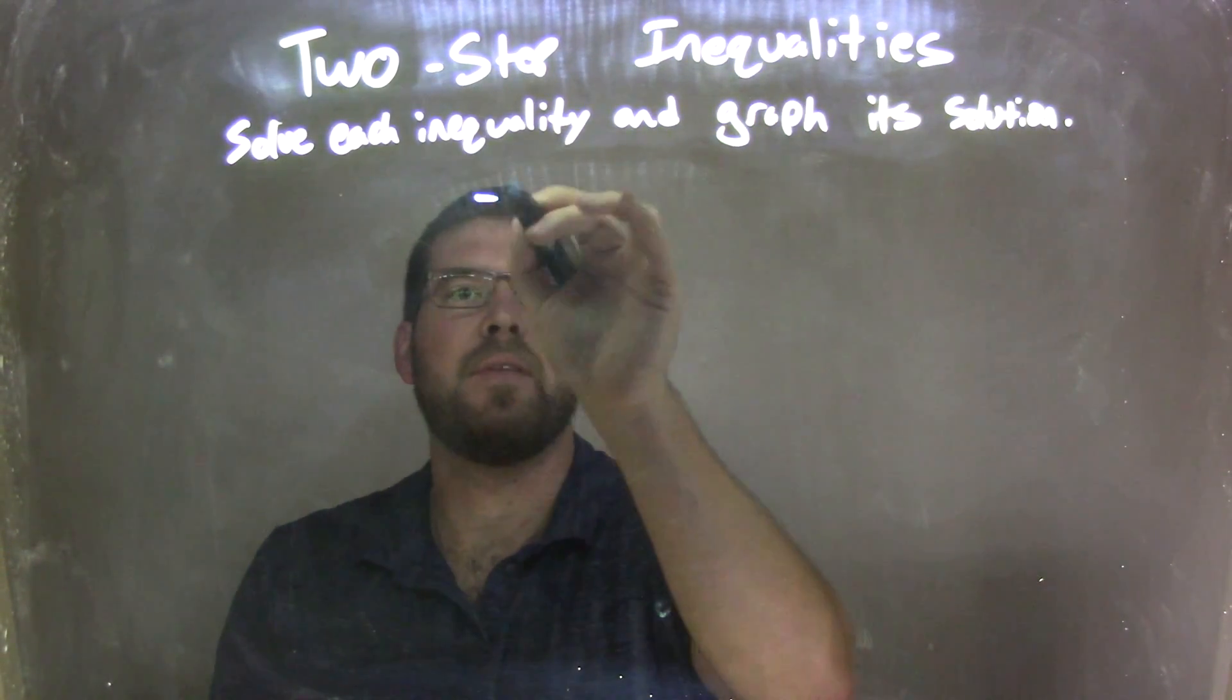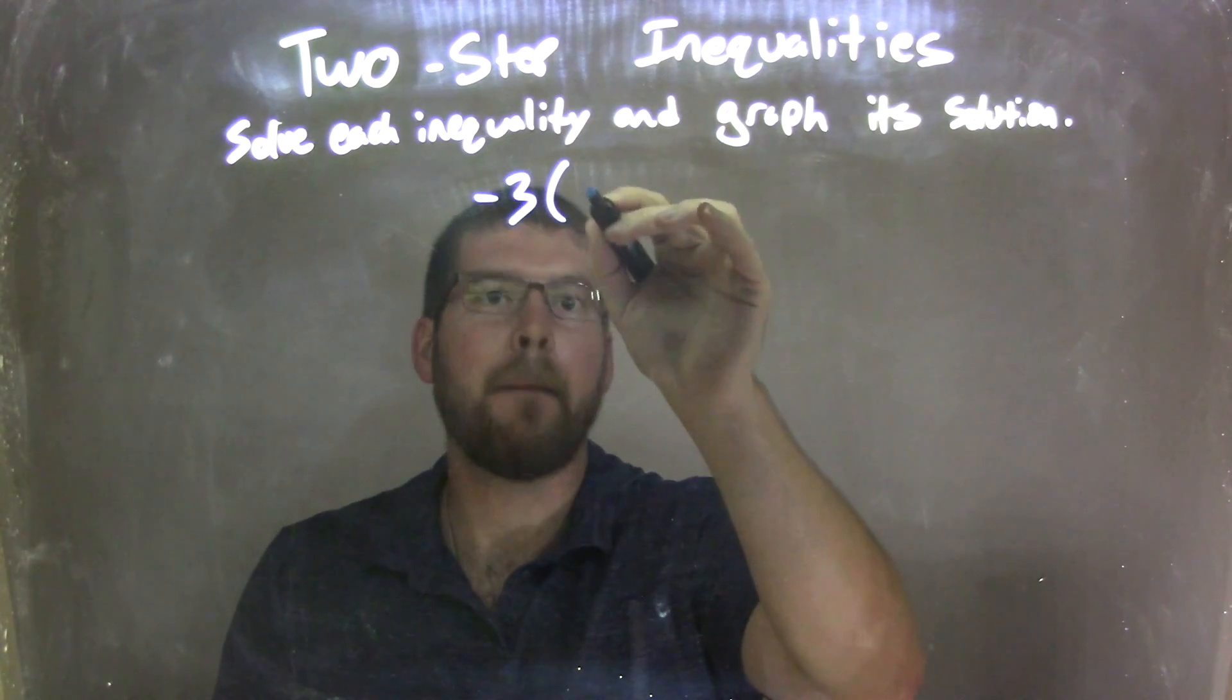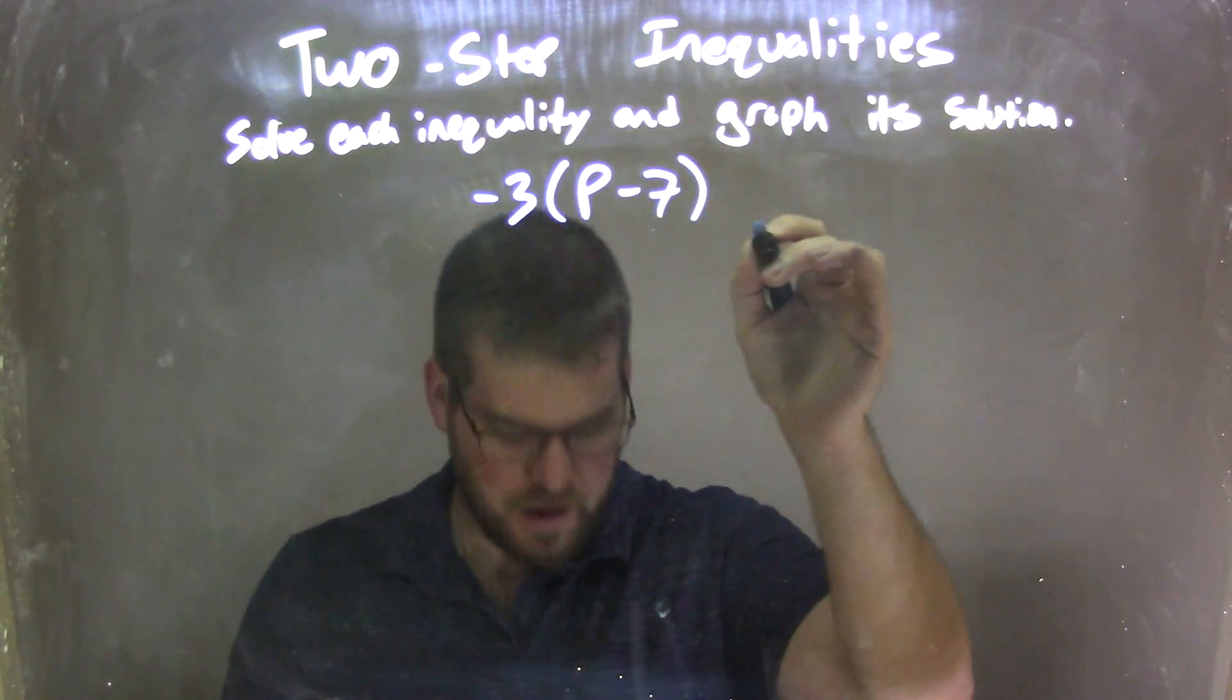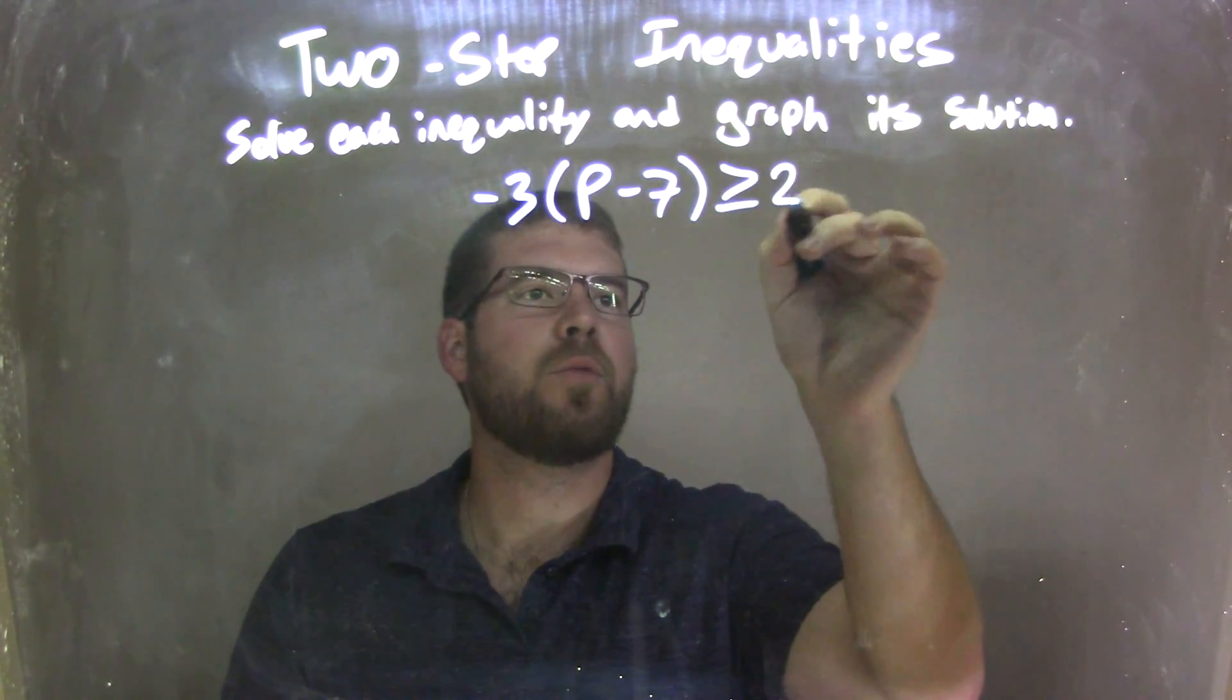So if I was given this inequality, negative 3, parentheses, P minus 7, in parentheses, is greater than or equal to 21.